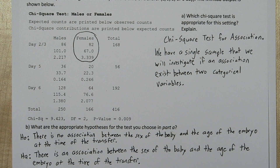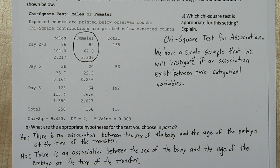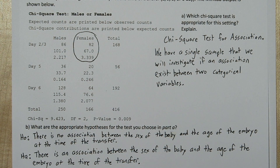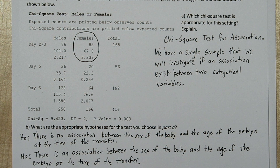So with that low p-value, we concluded that the sex of the baby is associated with the transfer day. If you look at the table again, it seems like the embryos transferred on days 5 and 6 tended to really favor male births, while the embryos transferred on days 2-3 were almost even with males and females. So there's a lot of evidence for an association.